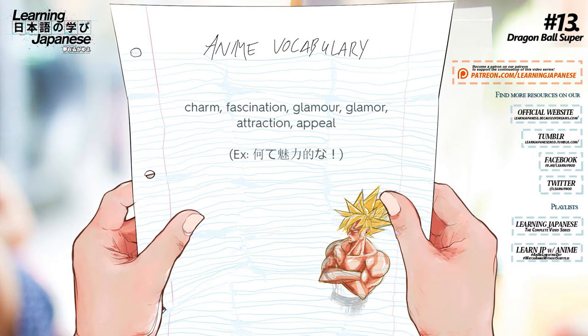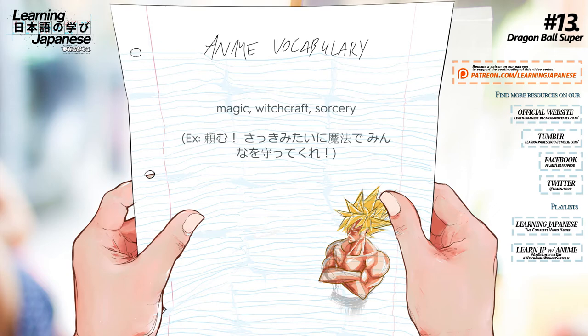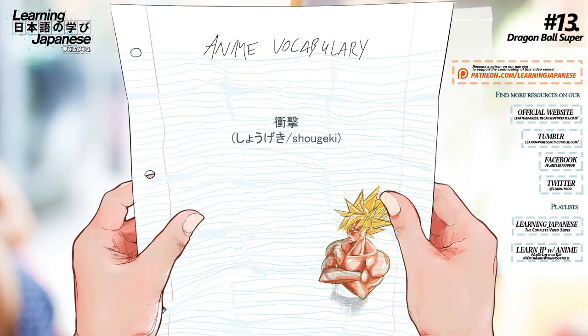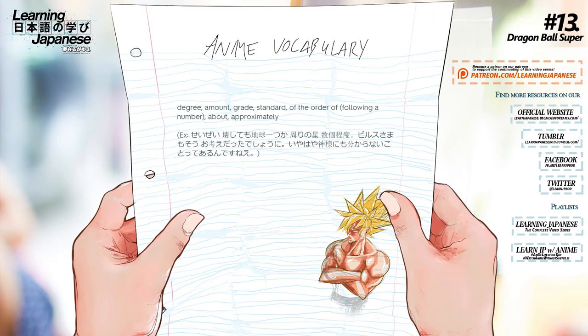魔法 — Magic, witchcraft, sorcery. 衝撃 — Shock, crash, impact, ballistic. Raid — Degree, amount, grade, standard, of the order of about, approximately.